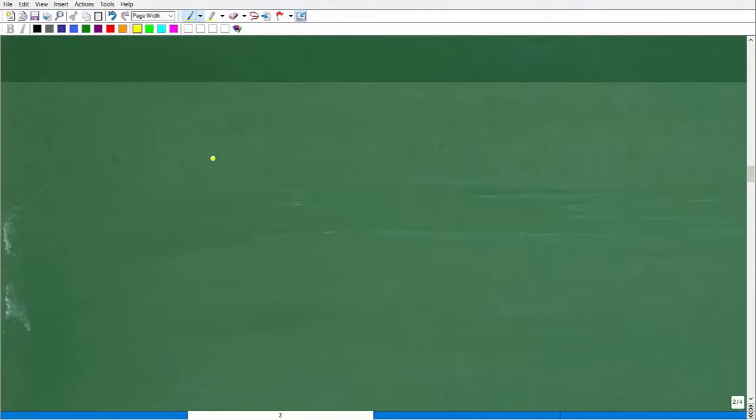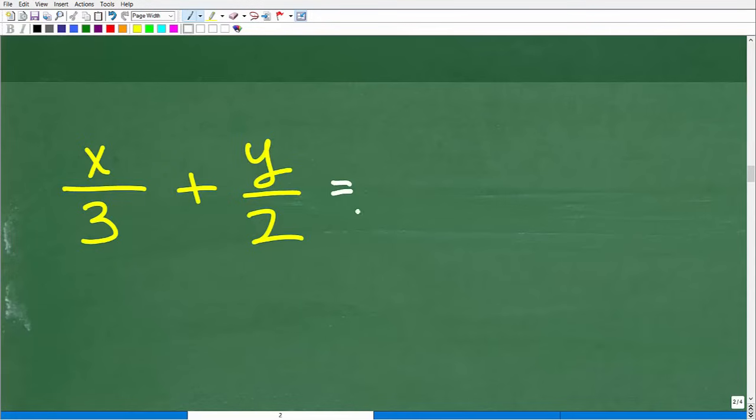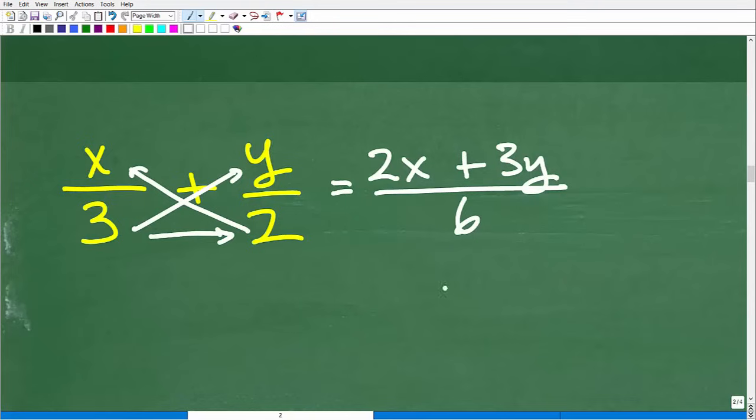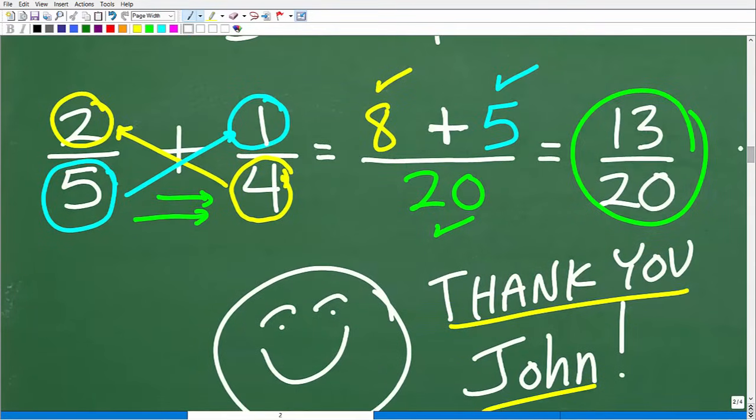So let me show you, for example, what if I had like X over three plus Y over two. Okay. So now we're kind of doing a little bit of algebra here. So watch how easy it is to add these fractions. I'm going to start from here to here. Two times X is 2X plus it's an addition problem. Three times Y is 3Y. I'm going to put that over three times two, which is six. And I am done. You get your little A plus, you get your 100%. And that is fantastic.